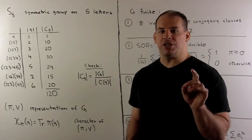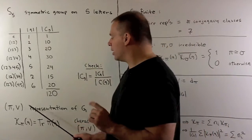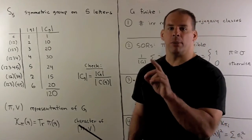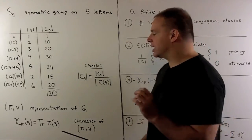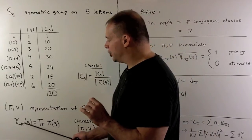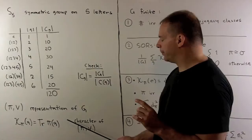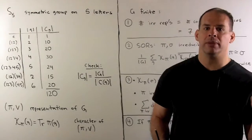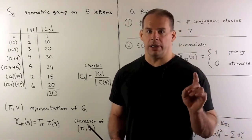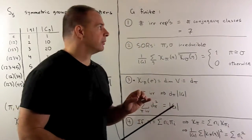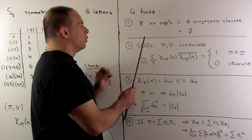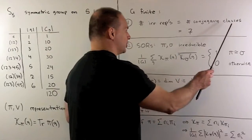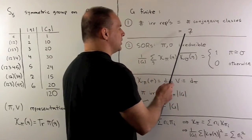We move on to definitions and rules of computation. If we have pi, a representation of our finite group G, we can define the character of pi as a function from our group to the complex numbers. This is given as: the character at the element g is equal to the trace of pi of g. If we're interested in irreducible representations and irreducible characters, the irreducible characters are severely limited. The number of inequivalent irreducible representations, or the number of irreducible characters, is equal to the number of conjugacy classes. So for S5, that's equal to 7.